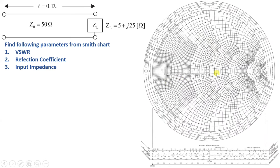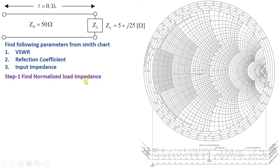Let us look at the Smith Chart. By using this Smith Chart, we will identify these three parameters step by step. If you observe, load impedance ZL is 5 plus J25. Whenever you plot impedance on a Smith Chart, you have to calculate normalized impedance. So first, we need to identify normalized load impedance, which is ZL divided by Z0 — that is 5 plus J25 divided by 50 — giving us 0.1 plus J0.5.